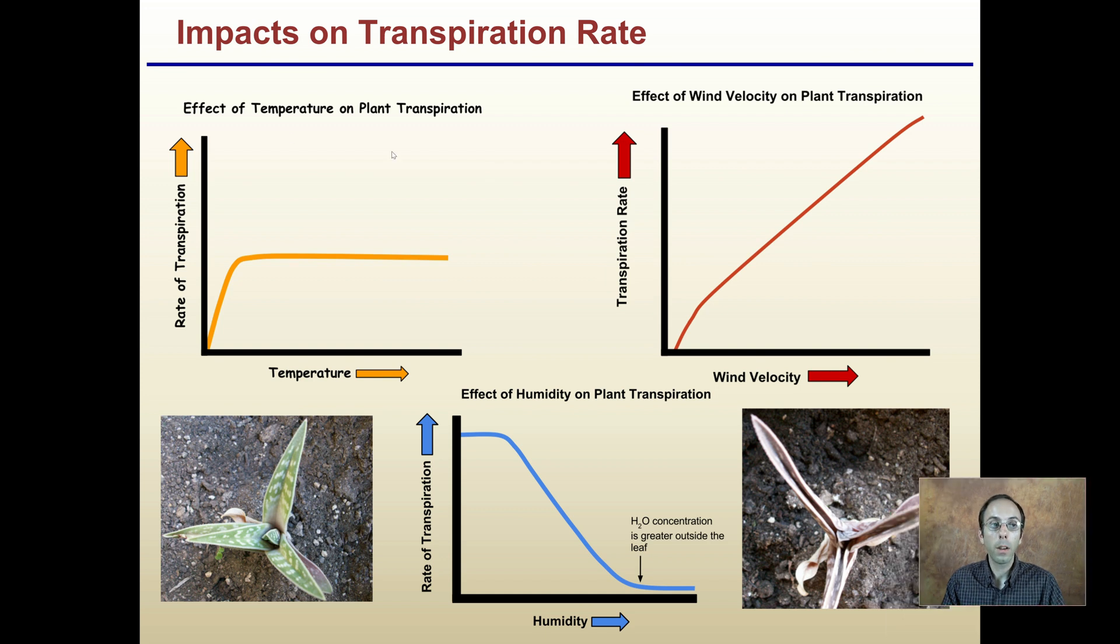Impacts on the transpiration rate: temperature, as we increase temperature, the rate of transpiration will increase and then plateau to a certain point. Wind velocity, as the wind velocity keeps increasing, so does the rate of transpiration. And kind of an opposite effect is humidity. As you increase the humidity, as you increase the moisture that's in the air, the rate of transpiration will actually inverse or decrease. If there's more water in the air, it's harder for that water to evaporate, and therefore the rate of transpiration will decrease for that plant.